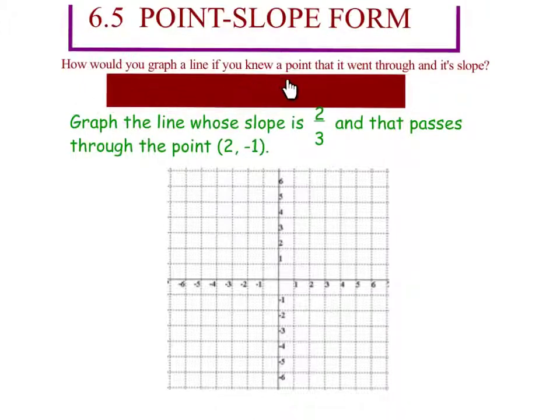So how would you graph a line if you knew a point that it went through and its slope? Well, what would you do? You would plot the point and then use the slope to finish the line. Let's do that right now.